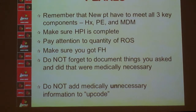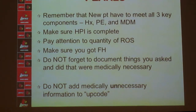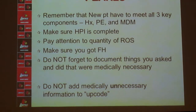In closing: new patients must meet all three key components — history, physical, and medical decision-making. The biggest mistakes are an incomplete HPI, insufficient review of systems (10 required for new patients versus 2 for established), forgetting family history (which immediately limits you to Level 3), and not documenting the exam elements you performed. Do not forget to document what you did that was medically necessary — but do not add unnecessary elements just to upcode. A real example: I told a resident to complete their note because I knew they had done more on physical exam, and they added a testicular exam for a patient whose visit was entirely unrelated to that. To an auditor, that looks like fraud and upcoding. Thank you and have a great day.